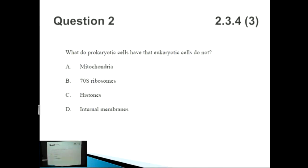What do prokaryotic cells have that eukaryotic cells do not? Let's look at prokaryotic cells first. We know that you do not have mitochondria, so it's not A. 70S ribosomes. Some people might get confused between 70S and 80S ribosomes, and we'll talk about that in a second.